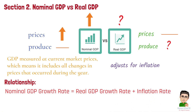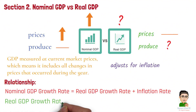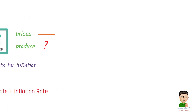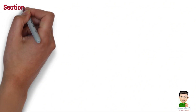Let's say nominal GDP grew by 7% in a given year and inflation during that year was 2%. So real GDP growth rate equals nominal GDP growth rate minus inflation rate, which equals 7% minus 2% equals 5%.